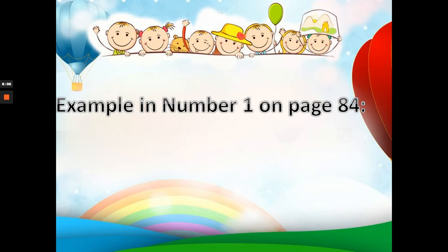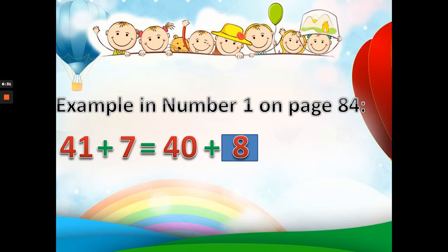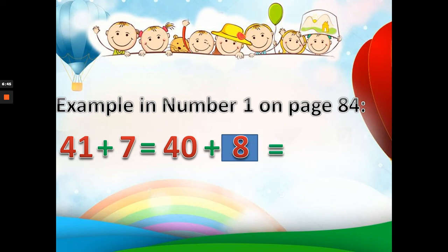Before you start, let me give you an example using number one on page 84. We have 41 plus 7. First we separate 41 into 40 and 1, then add 1 plus 7 to get 8, so we have 40 plus 8. The answer is 48. Very easy, right?